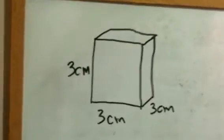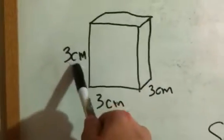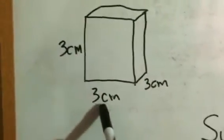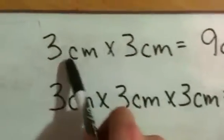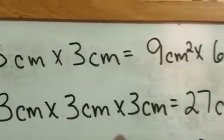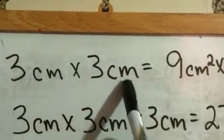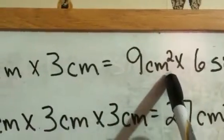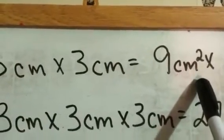So first, what we will calculate is the area of one side, three centimeters by three centimeters. Over here, I've already worked it out, so you've got three centimeters times three centimeters, so three times three is nine. And then you're actually multiplying the units as well, so it's centimeters times centimeters, which gives you centimeters squared. Now you're not done yet at this point, that's only the area of one side.